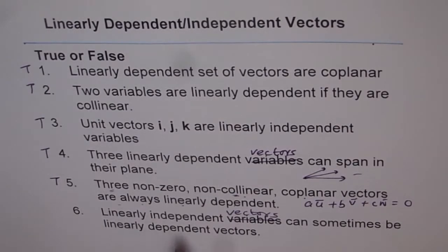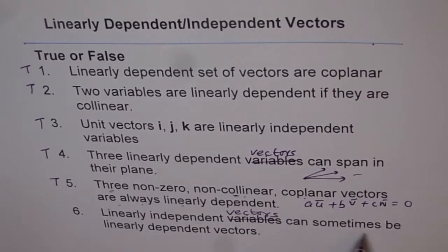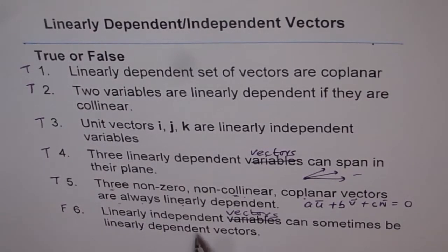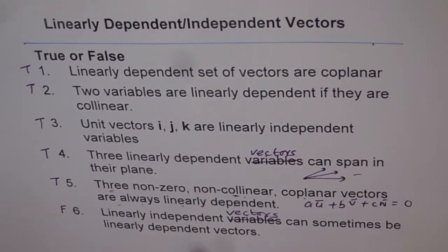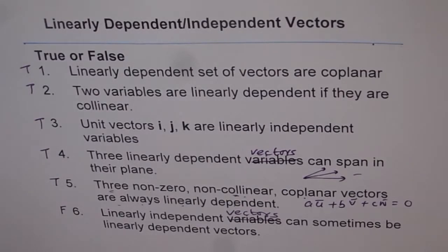Question 6: Linearly independent vectors can sometimes be linearly dependent vectors — that is absolutely false. If vectors are linearly independent, they cannot be dependent. It is either one or the other. So questions one through five are all true, but the sixth one is false. That is the answer for these questions, and I hope that helps you understand the topic much better. Thank you.